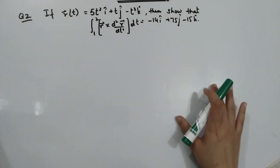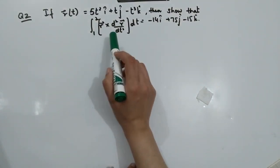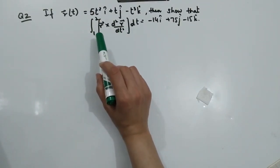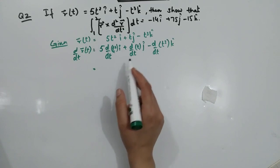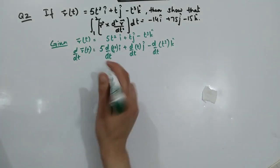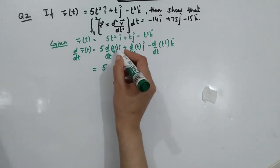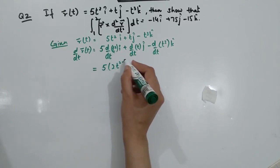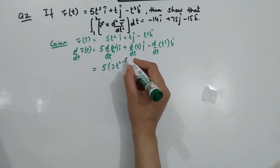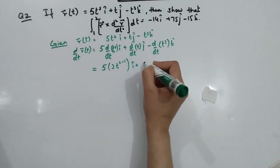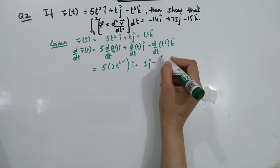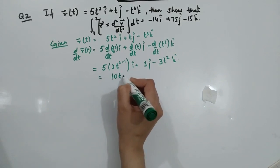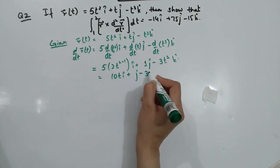In Question 2, R is given and you need to find its second derivative, then take the cross product, and then integrate. Take the derivative: using the power rule, the power comes down and multiply, so 5T squared becomes 10T for the i component. The derivative of 1 is 1 for the j component. For minus T cubed, the power rule gives minus 3T squared for the k component. So the first derivative is 10Ti plus J minus 3T squared k.